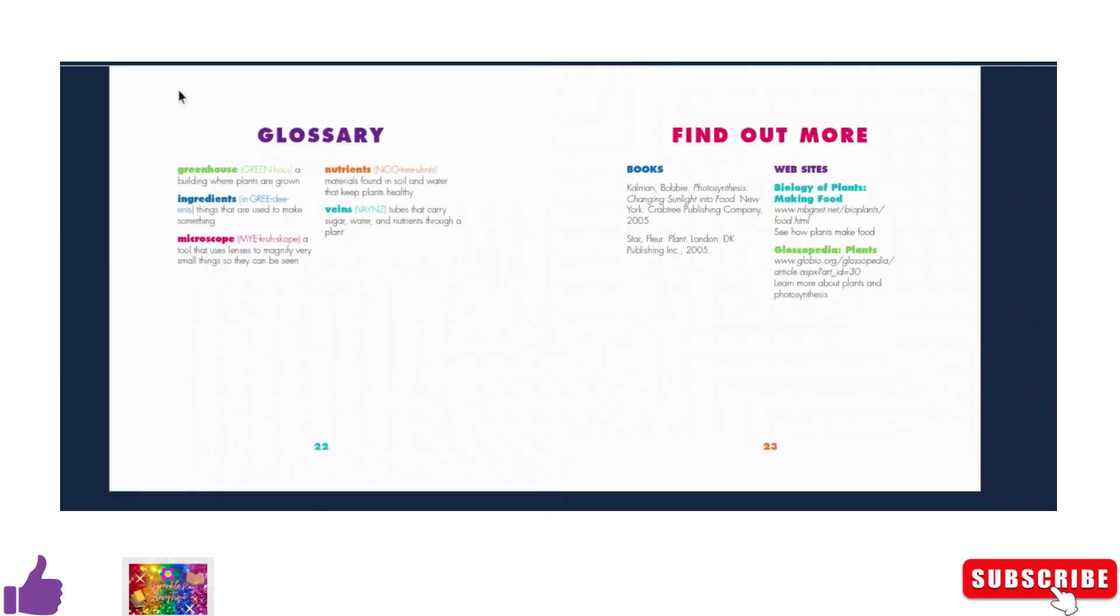Glossary: Greenhouse means a building where plants are grown. Ingredients means things are used to make something. Microscope means a tool that uses lenses to magnify very small things so they can be seen. Nutrients means materials found in soil and water that keep plants healthy.